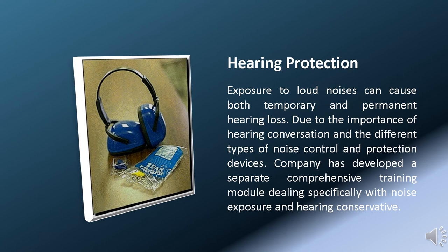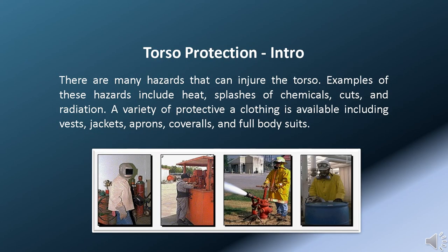There are many hazards that can injure the torso. Examples of these hazards include heat, splashes of chemicals, cuts, and radiation. A variety of protective clothing is available, including vests, jackets, aprons, coveralls, and full-body suits.